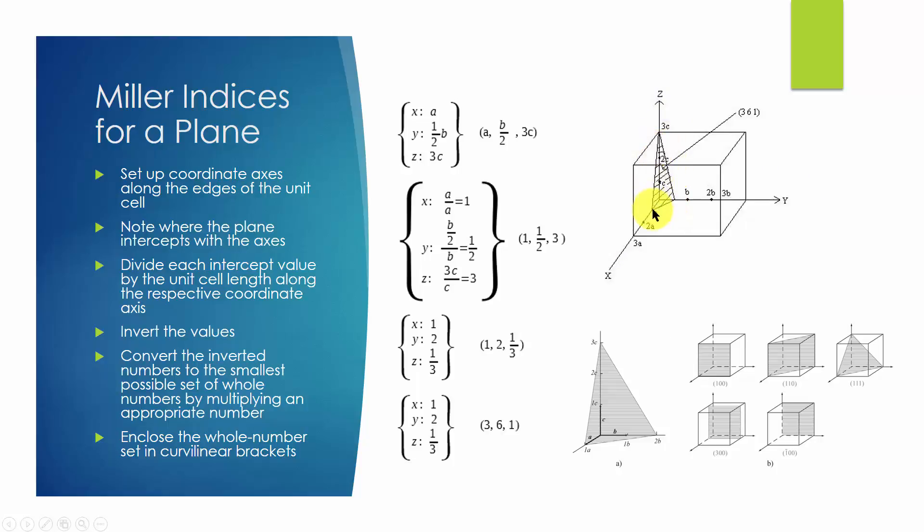Then let's look at the plane of interest and write down the values where it intercepts the axis. For this example, it is a for x axis, one half of b for y axis, and 3c for z axis.